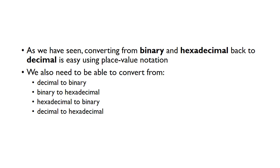So if you've seen, converted from binary and hexadecimal back to decimal is very easy using this place value notation. But we also need to be able to convert other ways, so from decimal into binary, from binary to hexadecimal, hexadecimal into binary, and then decimal to hexadecimal. So we'll look at those different ways of doing that.